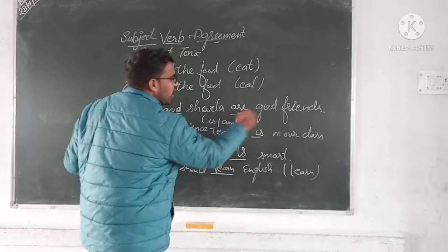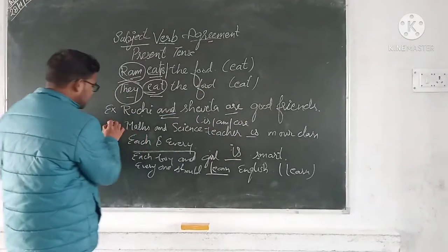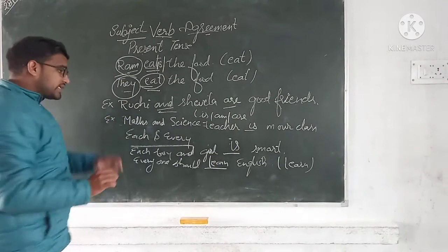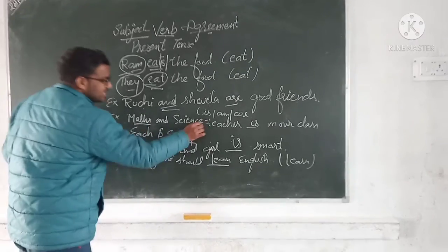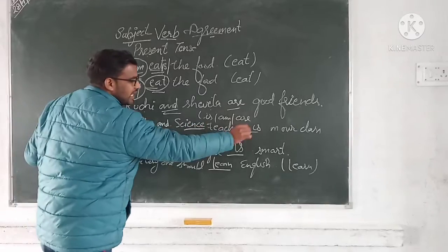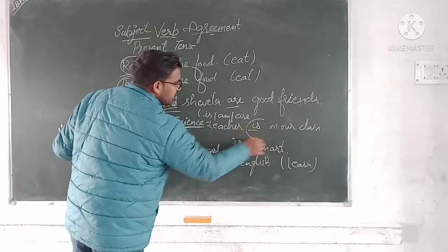For example, Ruchi and Shweta are good friends. If you have two things, like math and science teacher, what is this?